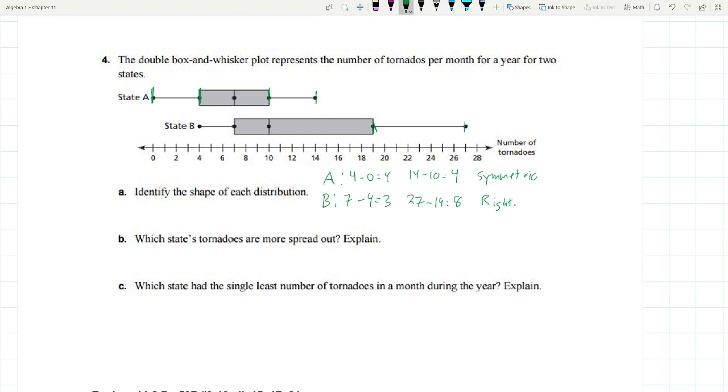Which state's tornadoes are more spread out? We really don't even need to calculate this. We can just say B. The range is larger. We'd go from 4 to 27, which is 23, versus 0 to 14, which is 14.